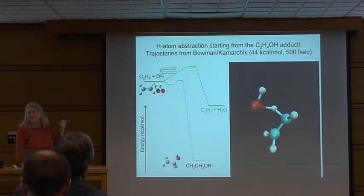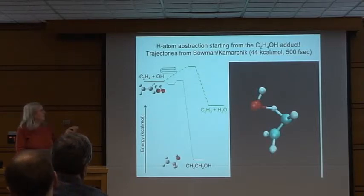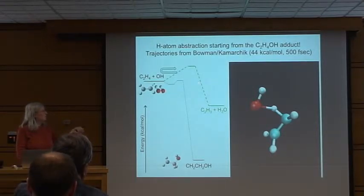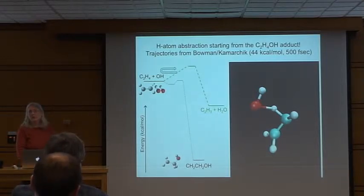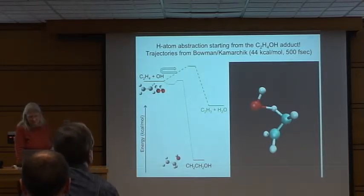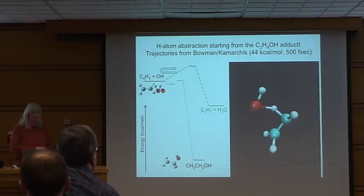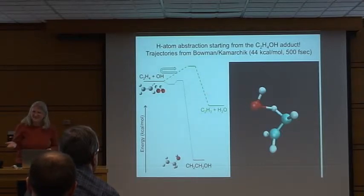In the past, if people did bimolecular reaction experiments from OH plus ethene and saw a vinyl product, they would say that's direct H-atom abstraction. But it is initiated by addition — the process starts as addition — and then it breaks up via an indirect mechanism that nonetheless manages to get the vinyl via abstraction. This substantially enhances the branching ratio to the C2H3 plus H2O channel. When we compare to Bowman's calculations at J=0, he had about 1% branching to this channel; we have 14%.